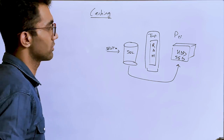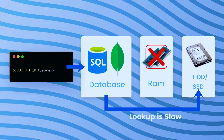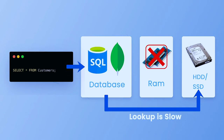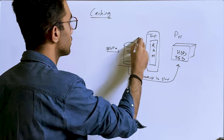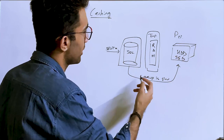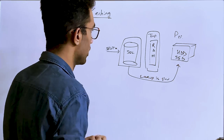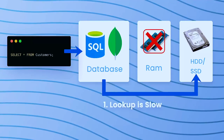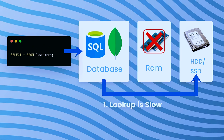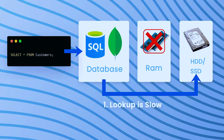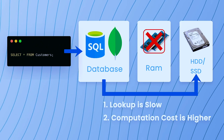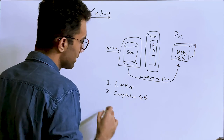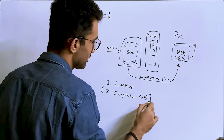Hard disk lookups are slow. Databases use all sorts of optimizations to keep some data in memory and some on disk. The two main reasons we need caching are: first, lookups from SSD or hard disk are slower compared to RAM; and second, the computation cost for complex queries is higher.